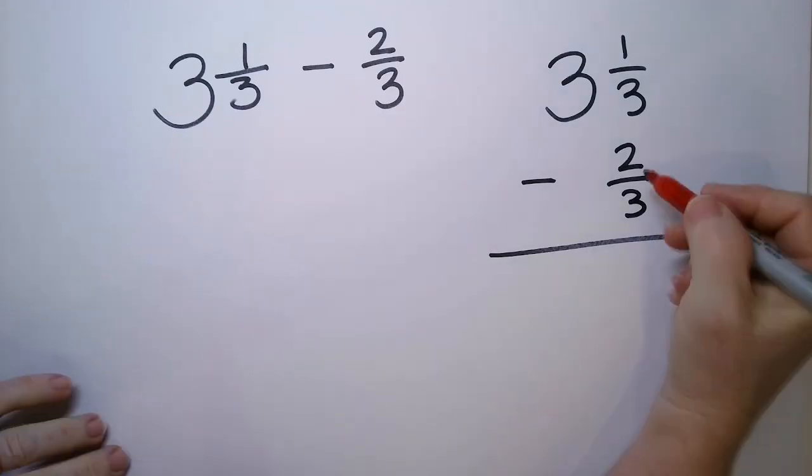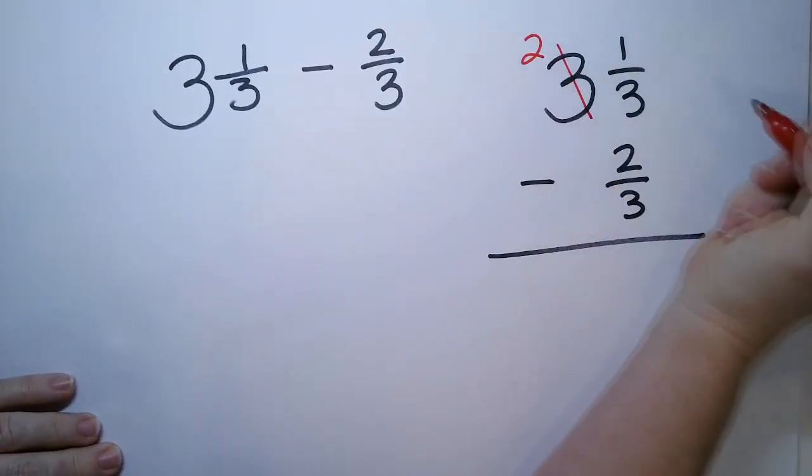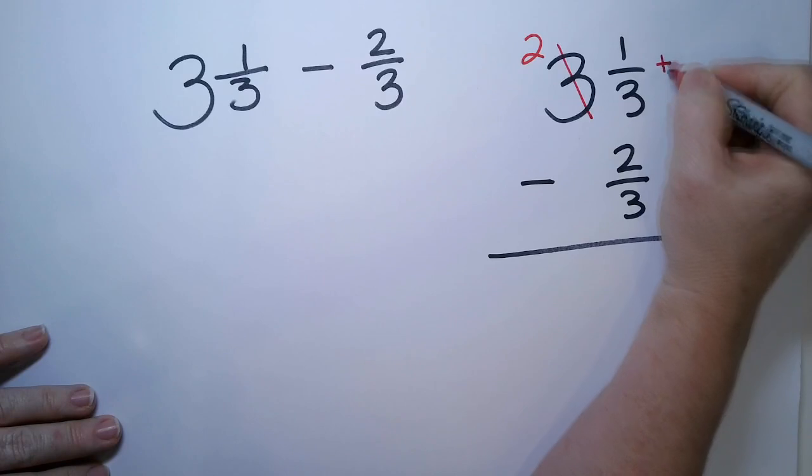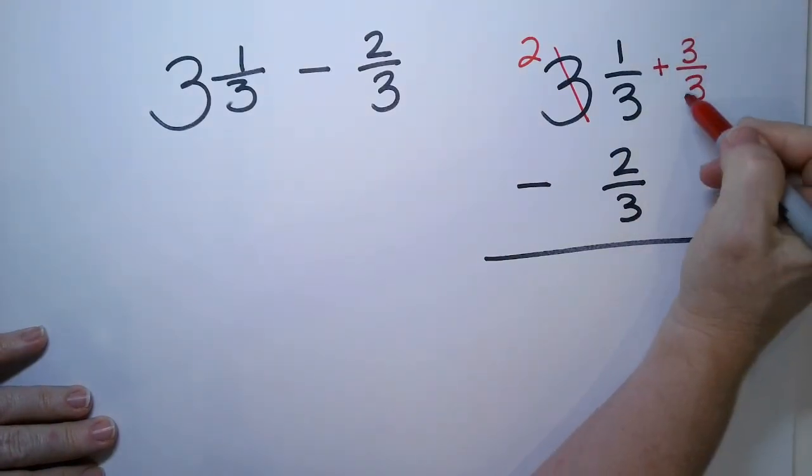So we're going to have to borrow because I can't take two thirds from one third. That just doesn't work. So just like when we borrow with whole numbers, I'm going to take two. But then how we add that one here is we say whatever the denominator is, we have the same number top and bottom because this is a form of one.